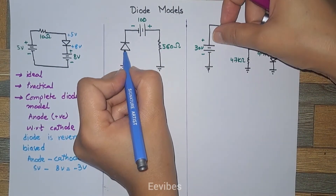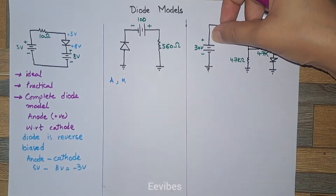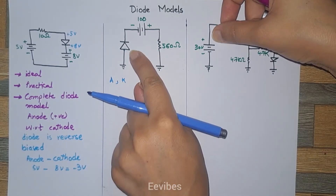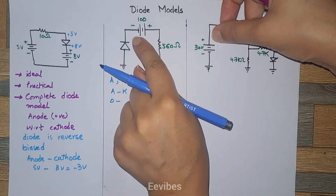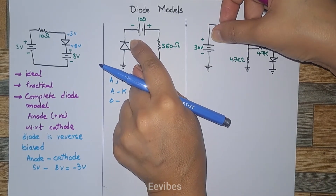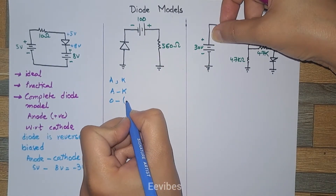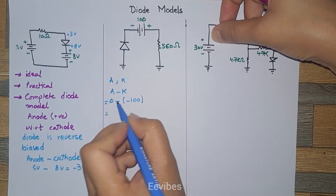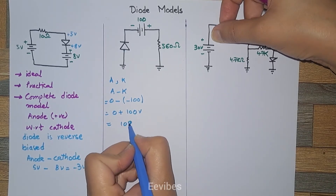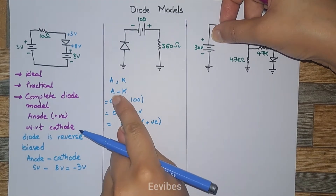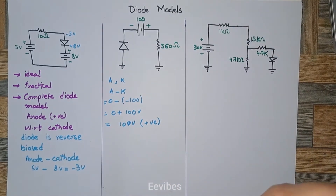Moving to the next circuit, I'll represent the anode terminal with 'A' and cathode with 'K'. The voltage at the anode terminal is zero volts since it is grounded. The cathode terminal is connected with the negative terminal of a minus 100 volt source, so the cathode voltage is minus 100 volts. The anode-to-cathode potential is 0 minus (minus 100), which equals positive 100 volts — a positive number — so this diode is forward biased.